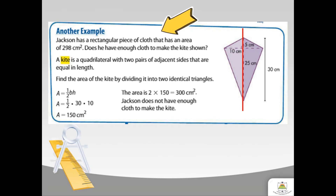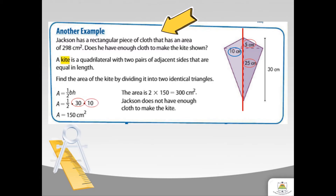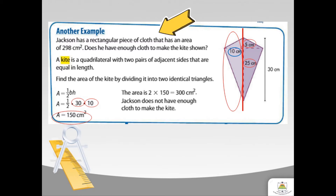As you can see, I decomposed the kite into two triangles. Using the formula A equals one-half base times height, we have the bases 5 centimeters and 25 centimeters, a total of 30 centimeters, and the height is 10 centimeters. Multiplying 30 times 10 gives 300, then divide by 2 to get 150 squared centimeters. Since there are two triangles, we double it: 2 times 150 gives 300 squared centimeters.